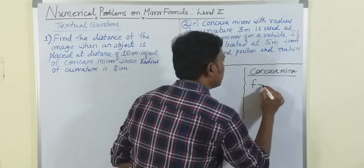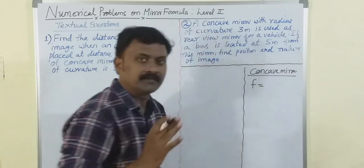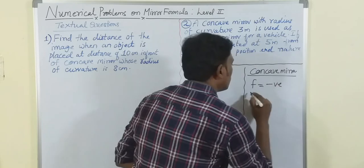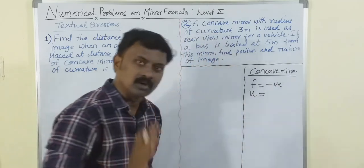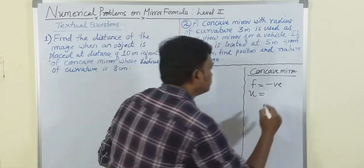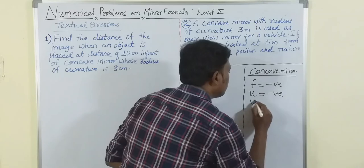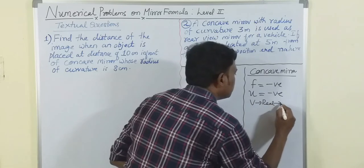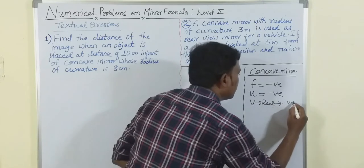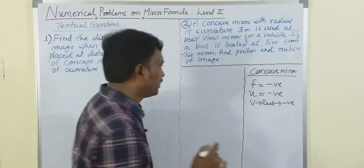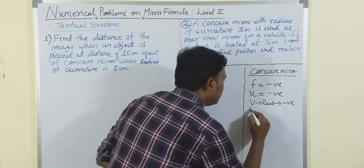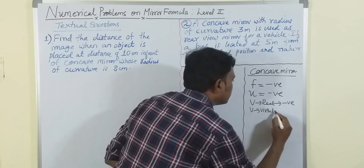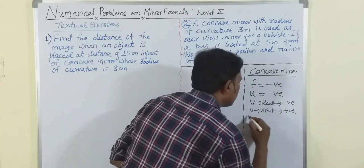For a concave mirror, you must keep in mind that f should always be negative. U is always negative. And for v: if the image is real, v is negative; if the image is virtual, v is positive.